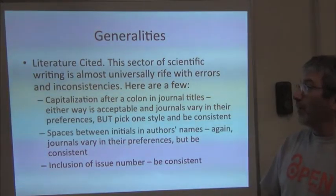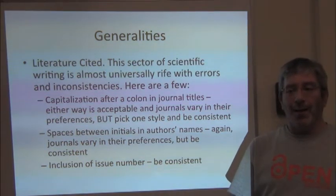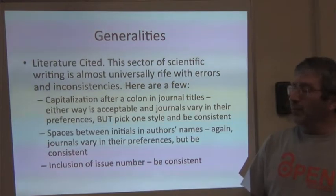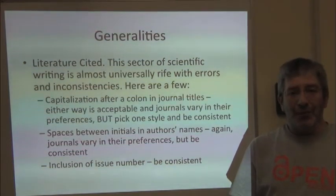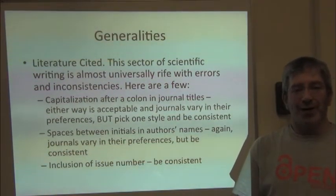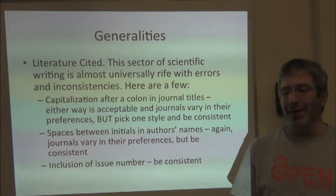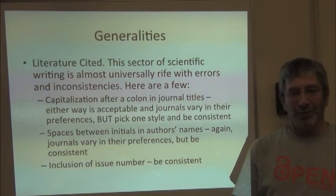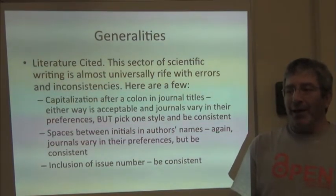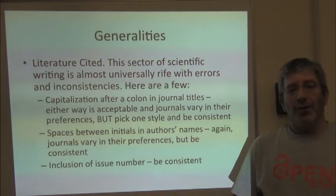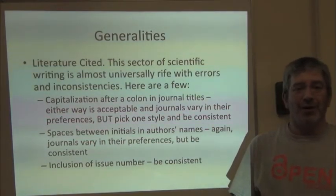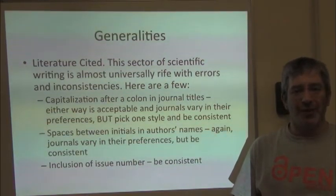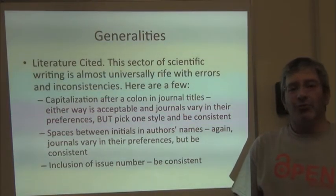Literature-cited sections are probably the most difficult detail to get right, which is to say a literature-cited section almost always includes errors. To give you an example, there is a literature-cited section challenge that I put out on the Biodiversity Informatics Training Curriculum Facebook page, and you're welcome to try that and see how well you can do. Nobody has yet found more than 80% of the errors. Essentially what I did was I took a page out of the journal Evolution, out of the literature-cited section in Evolution, and I introduced 50 errors to it.